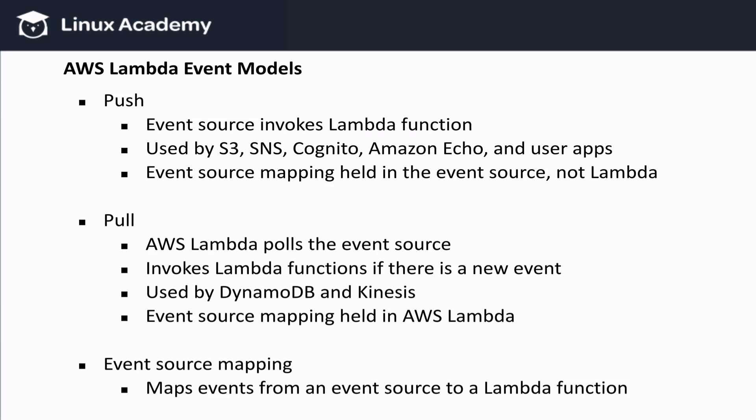We've now covered the major available event sources, but we haven't talked about event models. While event sources publish events, event models dictate how AWS Lambda detects an event, which then causes it to trigger a function. In other words, is Lambda checking for these events, or are event sources telling Lambda about new events? Well, it depends on the event source. And that's where the push-pull event model comes in.